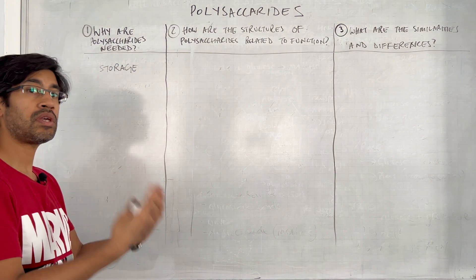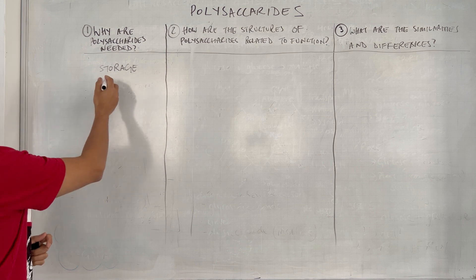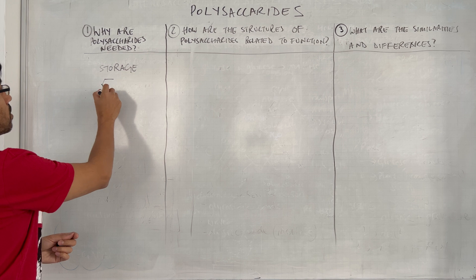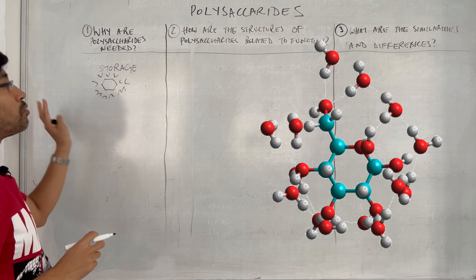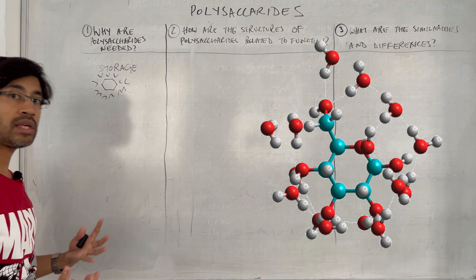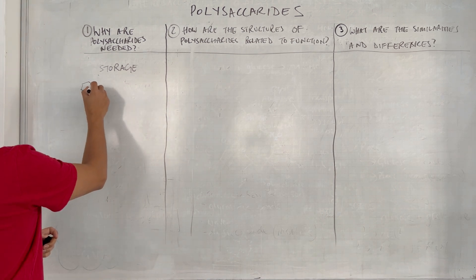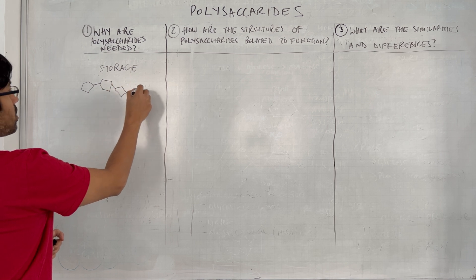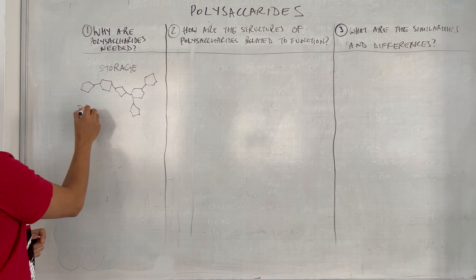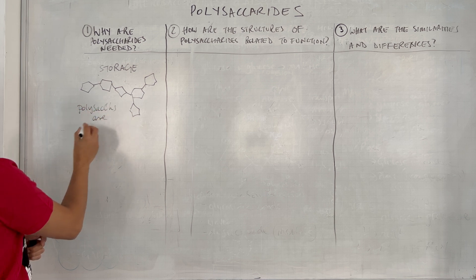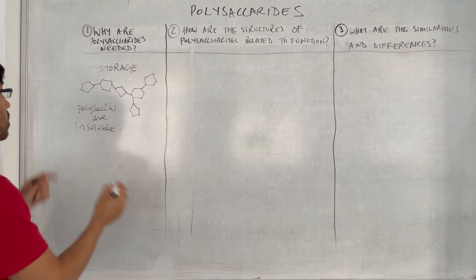We know that monosaccharides such as glucose can be used to release energy by carrying out respiration. So why don't we just store lots of glucose? The point is that glucose lowers the water potential — every glucose molecule has to have lots of water molecules surrounding it. The more glucose we have in the cell, the more water the cell has to store, and that can eventually lead to cells bursting. However, polysaccharides are insoluble, and because they are insoluble they don't affect the water potential.